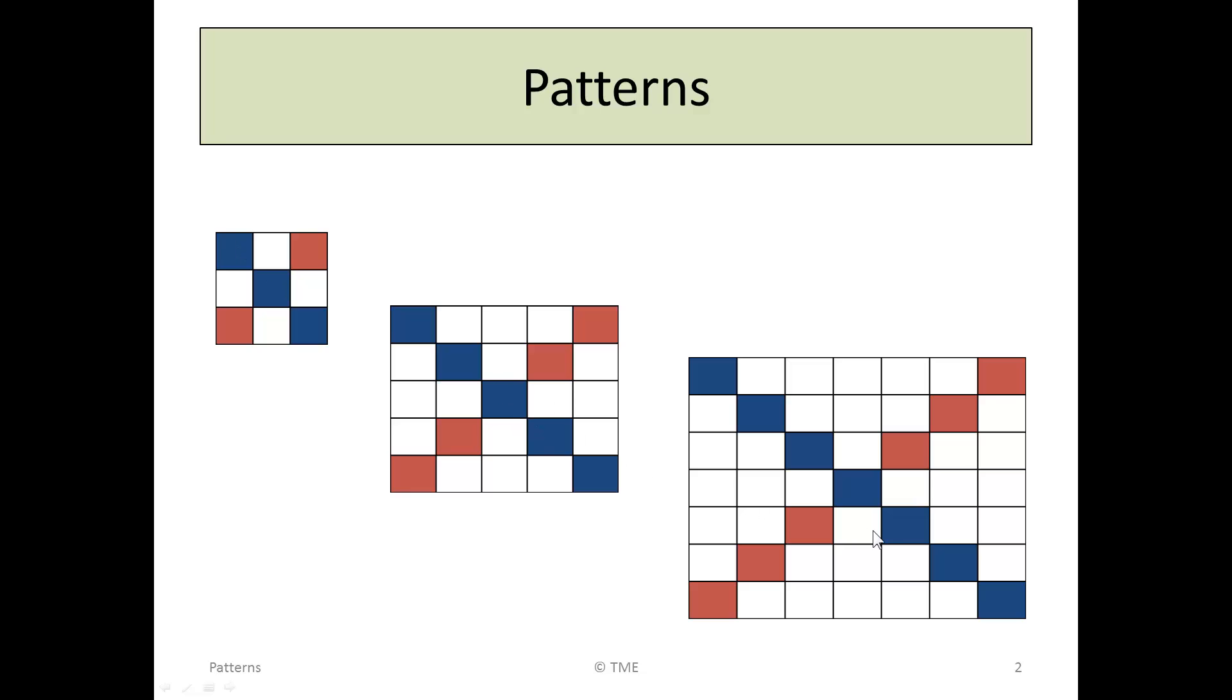and then a larger pattern again. In the first pattern, we've got three blue tiles along the diagonal and two red or reddish-brown tiles. Here we've got five blue ones and four reddish-brown, and then seven and six. As we grow from one size pattern to another, we can see the number of blue tiles going from three to five to seven. These are called arithmetic sequences.